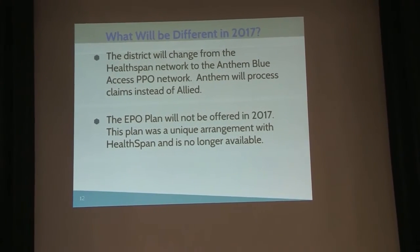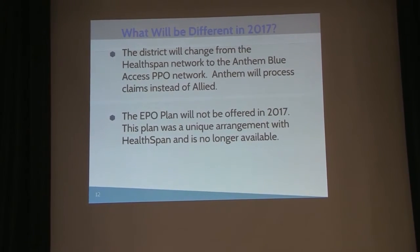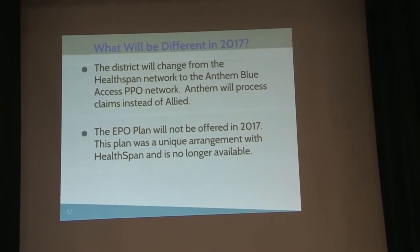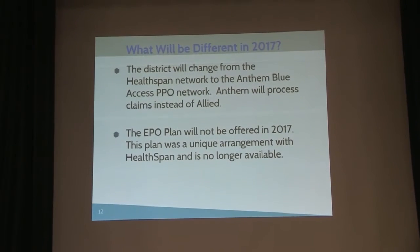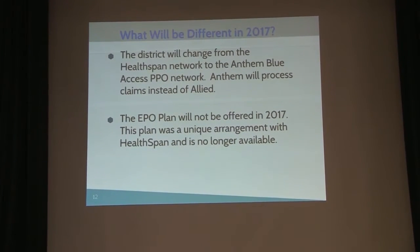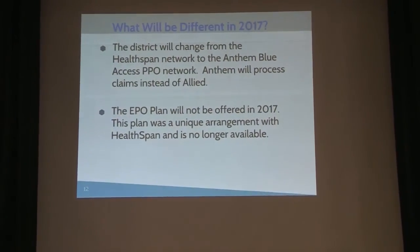The change that may impact you the most is where you may have used Allied in the past as our third-party administrator for health claims — now they are going to be administered by Anthem, so everything will go through Anthem. If you have any claims outstanding at the end of the calendar year, Allied will stay on board to help finish those claims. If you do not have a login with Allied right now, you may want to create one, because you'll continue to have access to your Allied claims information for 12 months after January 1st.